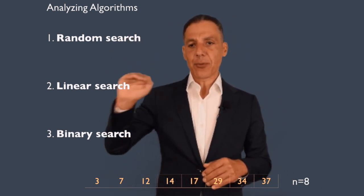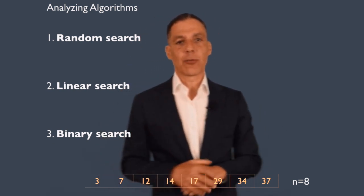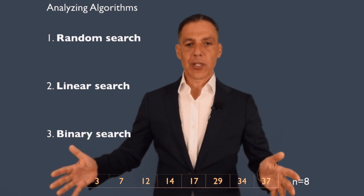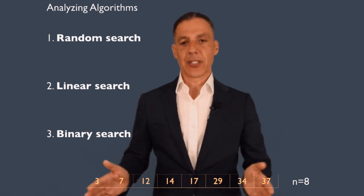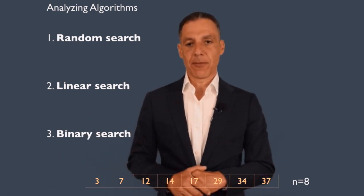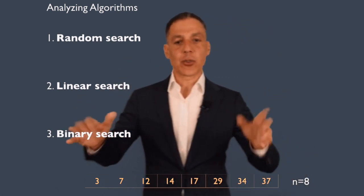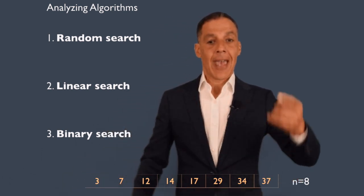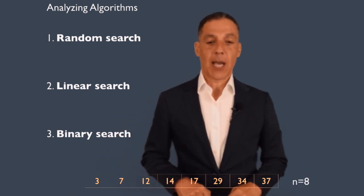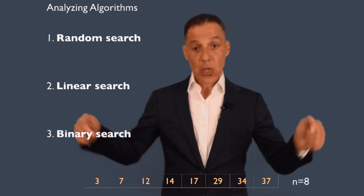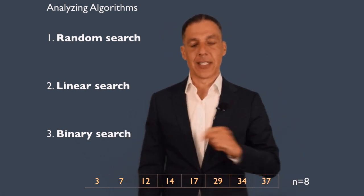Let's think about three different search algorithms: random search, linear search, and binary search. Starting with random search: I give you a list of numbers — say n equals eight integers in a standard list. The way search works is you're given a list and a key — something you're looking for, like the number 17 which is in this list, or 127 which is not — and your job is to tell me whether the item is in the list and perhaps where it is by index.